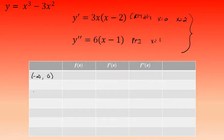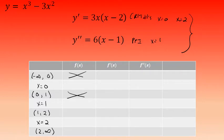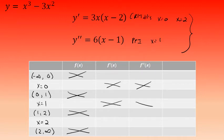Between each interval I'll include the actual x value that was the critical number or possible point of inflection. I'll complete this table by looking at the first and second derivative for each interval, without considering the original function for interval rows. For each of the x values, I'll look at the original function and not consider the first and second derivative.